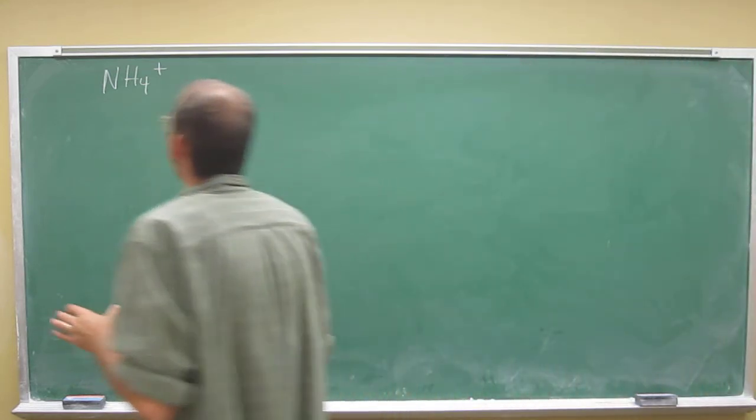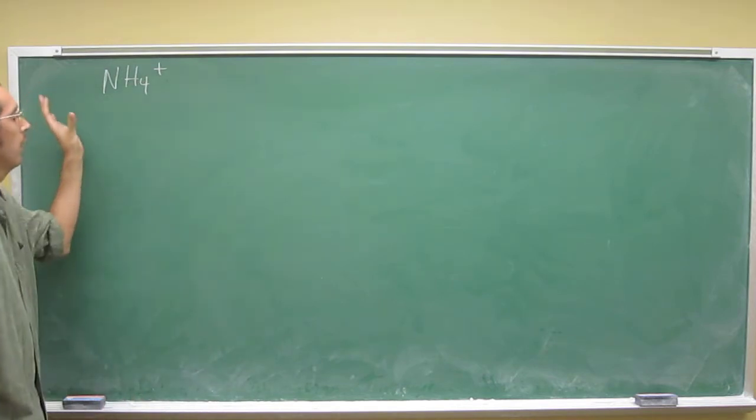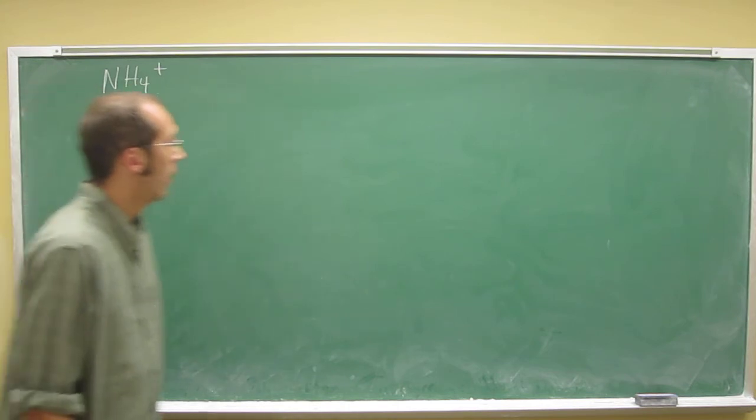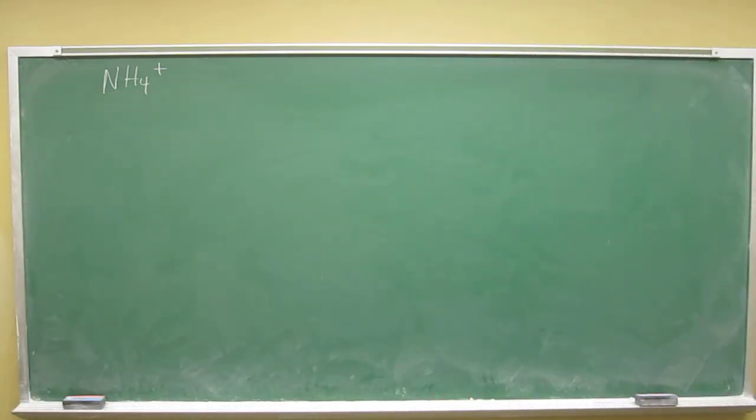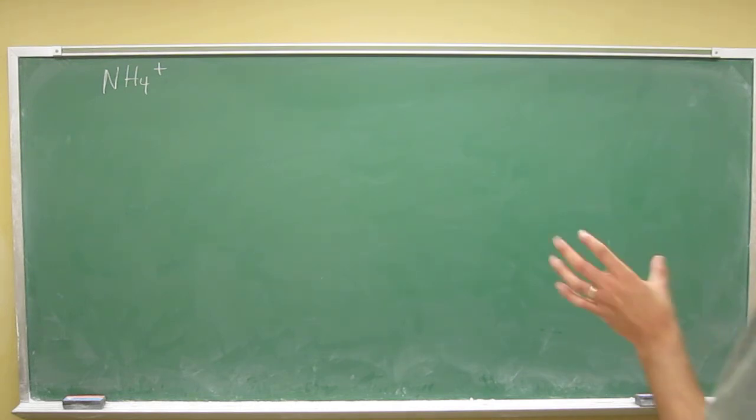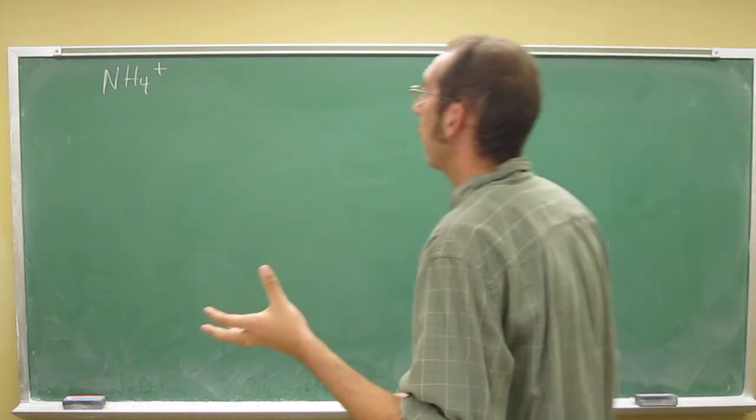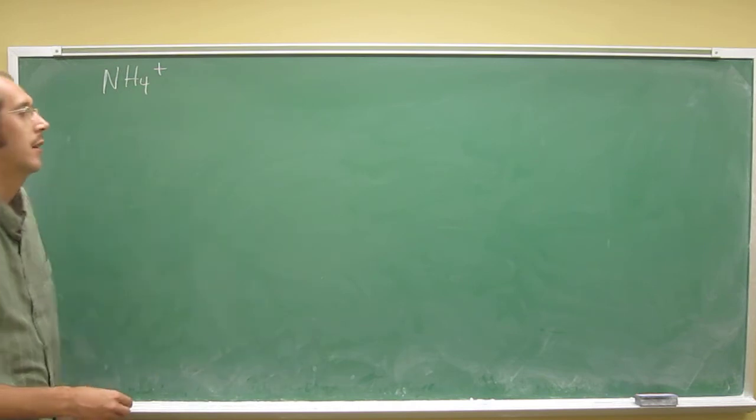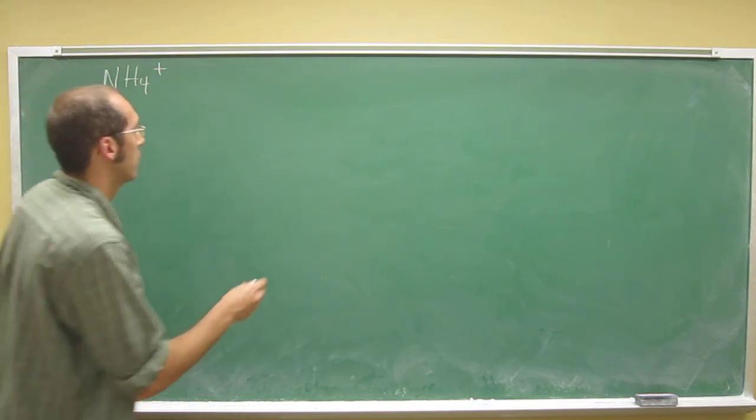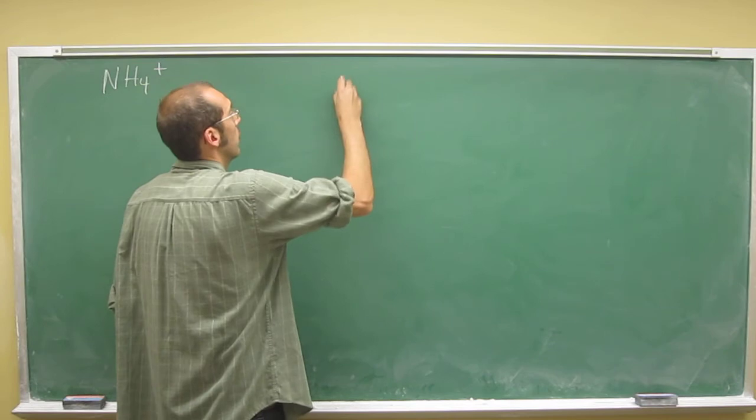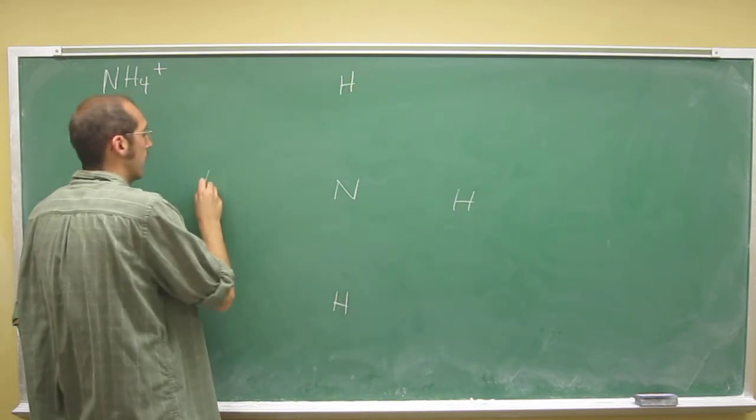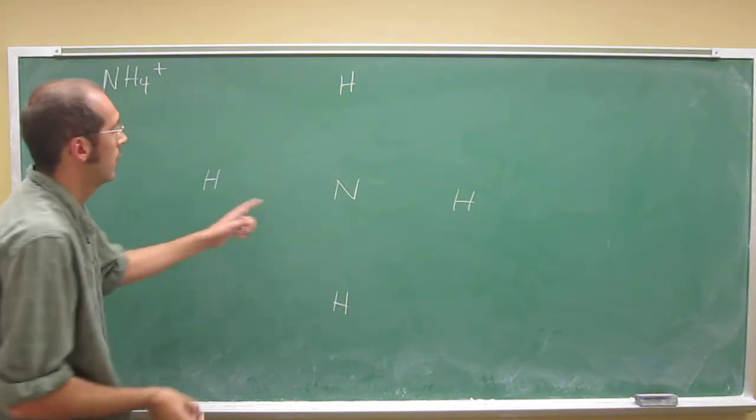So the first thing I would have you do is draw out all of the different atoms that are in this structure. You know already from the rules that the hydrogen atoms have to be on the periphery because they can only form one bond. So that means that the nitrogen has to be in the center. Let's just go about drawing that straight away. So it has to look something like this, because these can only make one bond.